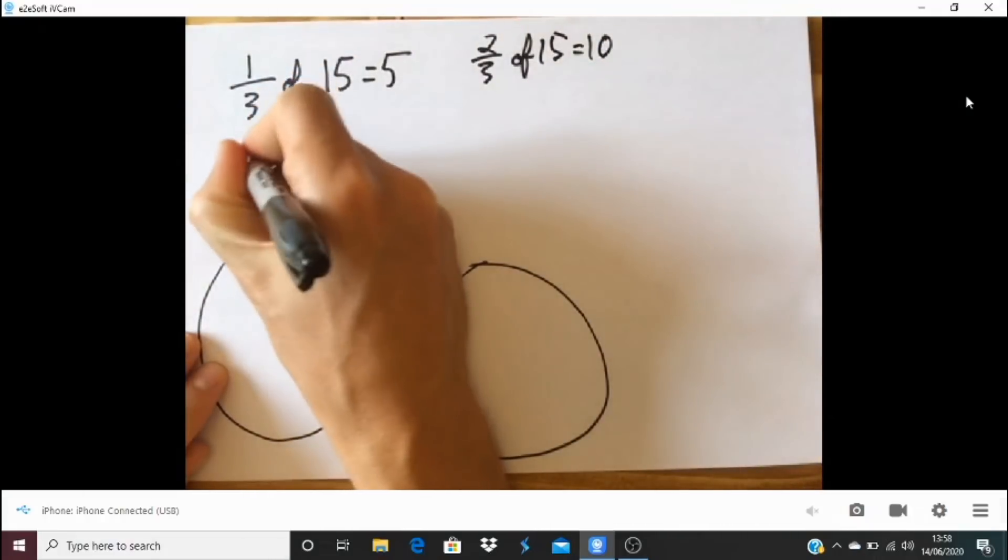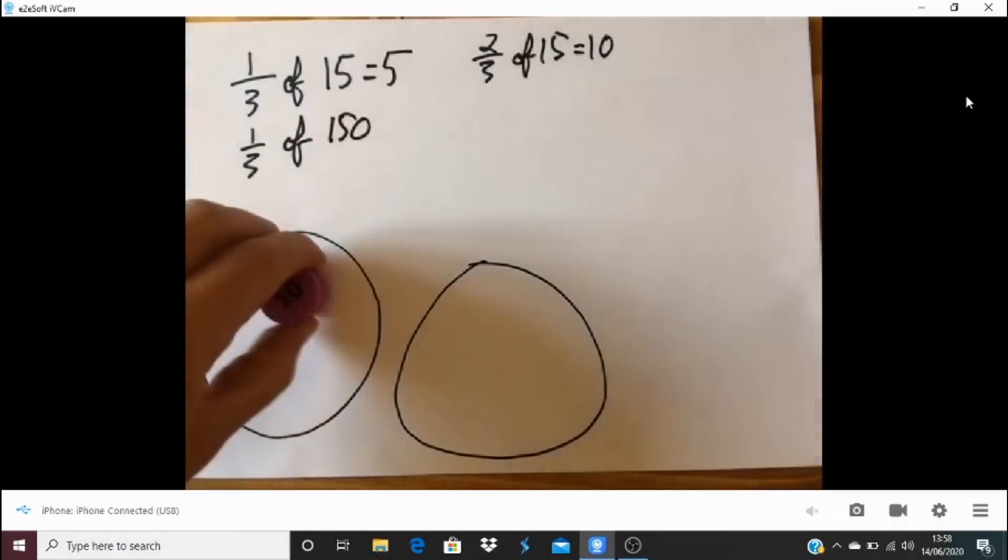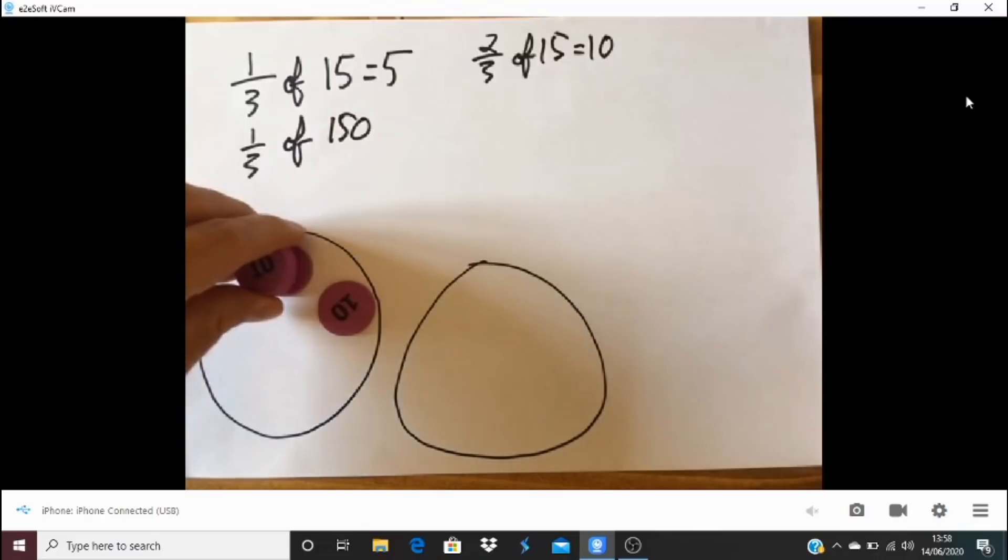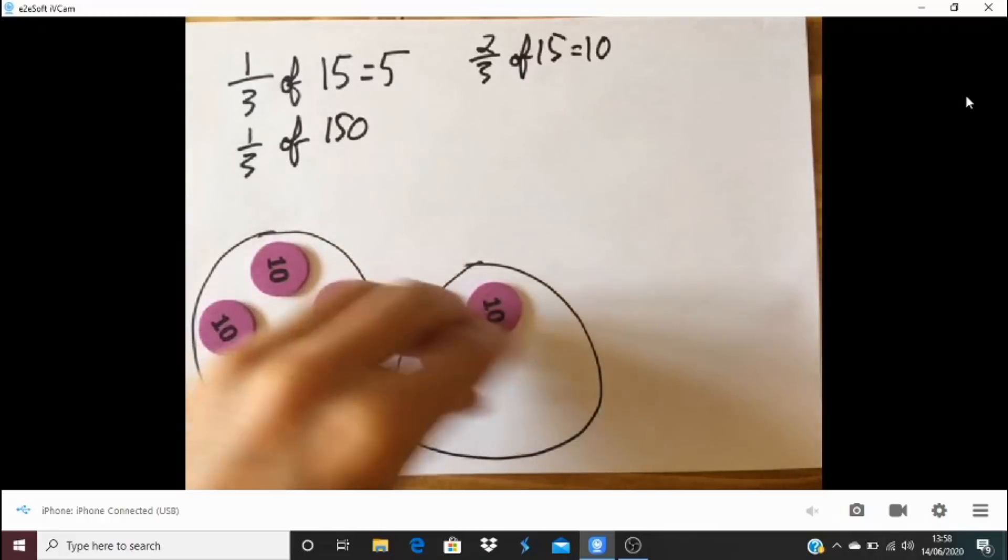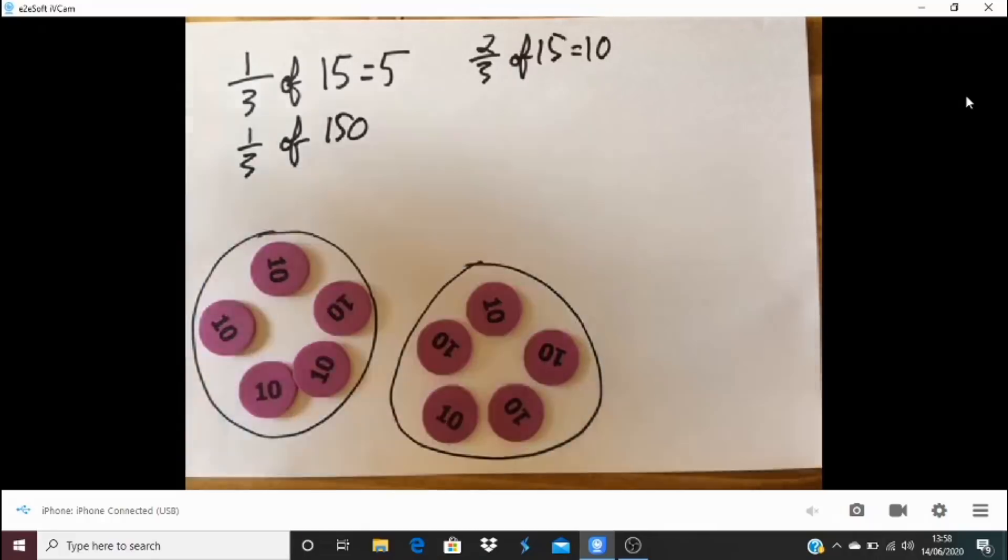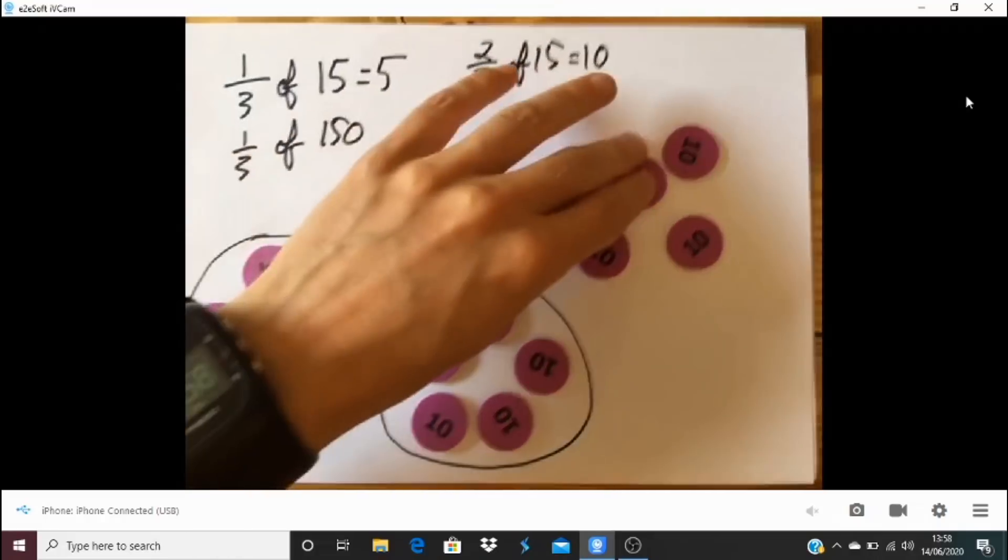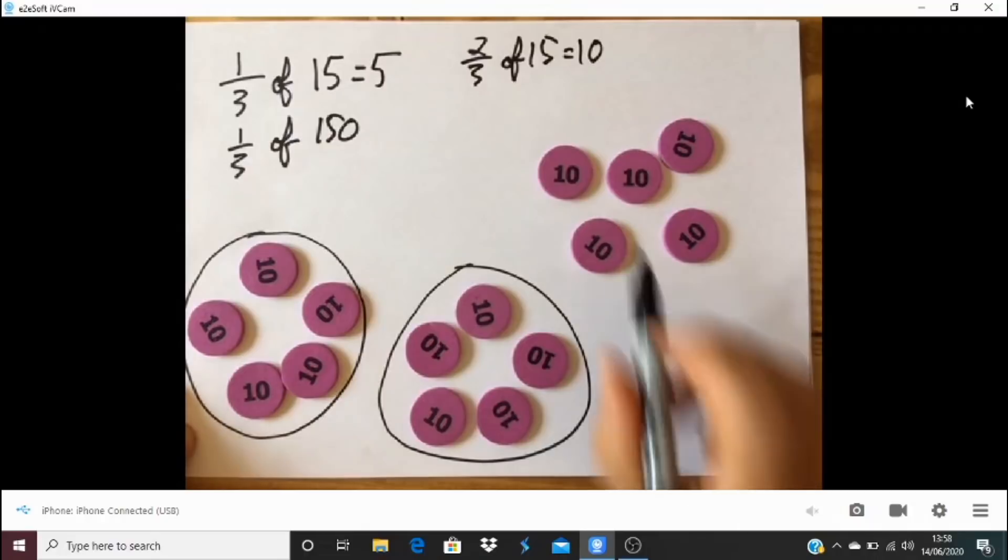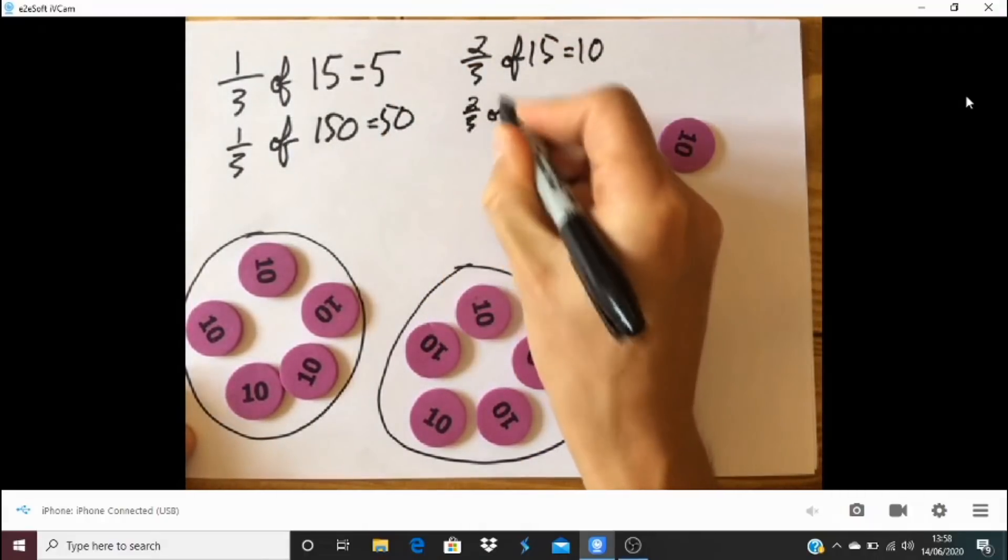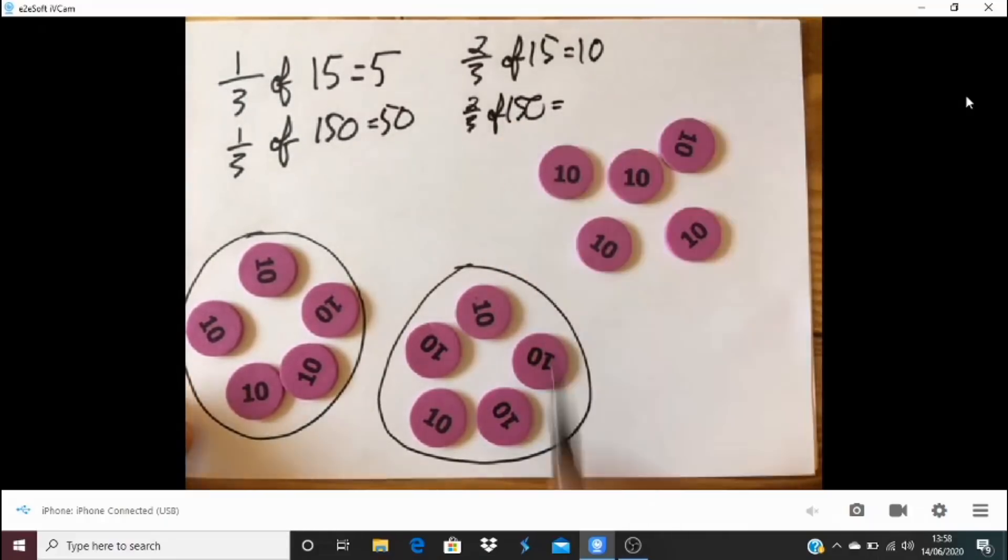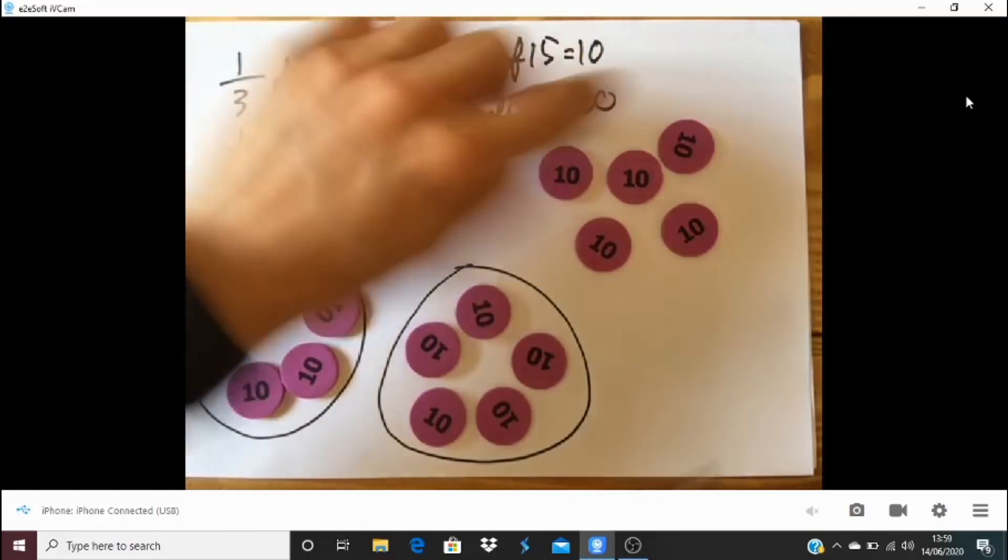Now let's see if we can do some others as well. So rather than finding a third of 15, let's see if we can find a third of 150. So here I've got 10, 20, 30, 40, 50, 60, 70, 80, 90, 100, 110, 120, 130, 140, 150. And I've already got them there in thirds. So one third of 150 is 50. And two thirds of 150? That is 100. And can you see it is 10 times more? The answer is 10 times more.